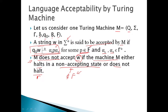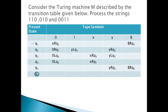Let us understand with an example. Suppose we are provided with a Turing machine represented by this transition table and we have to process these strings: 110, 010, and 0011.